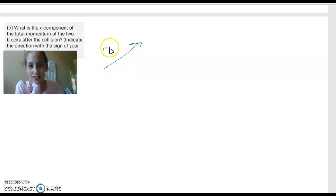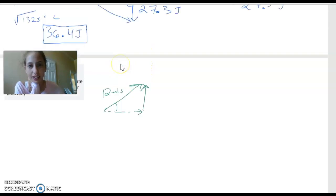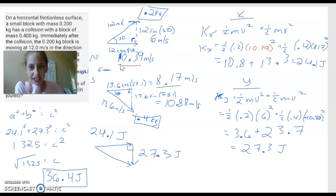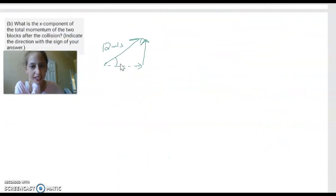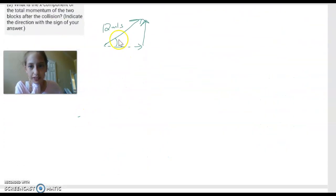Okay. So 12 meters per second. That's some angle. 30. So that was 10.39. Okay, and this is the 0.2 kilogram box.